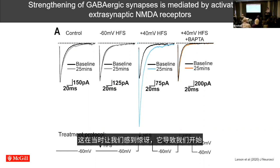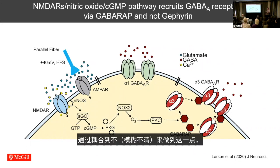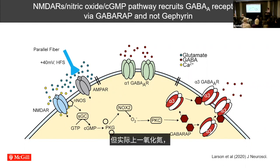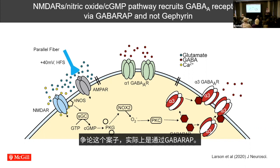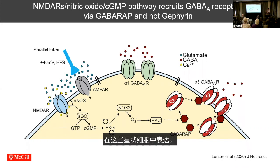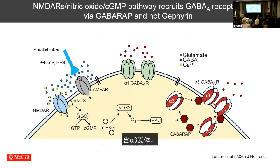What surprised us and led us toward thinking about therapy was that when we teased this apart, these extra-synaptic receptors couple not to CaMKII but to N-NOS — which has been tied into neurotoxicity in stroke models — but in fact the nitric oxide it produces, through cyclic GMP, causes strengthening of inhibitory GABA synapses. There are a couple of twists: it's not through gephyrin, which is the conventional view; it's actually through GABARAP, the original GABA receptor-associated auxiliary protein. And there's another type of inhibitory GABA receptor expressed in these stellate cells.